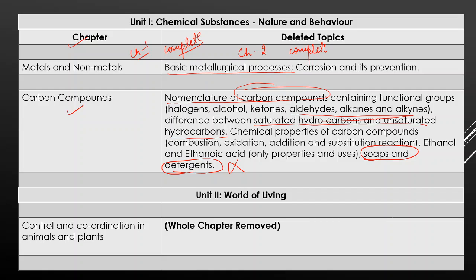We talk about second unit, World of Living, means Biology. Biology, you see what is deleted. We have six chapters in Biology. Life Processes, nothing deleted from this, this will come completely. After this our seventh chapter is Control and Coordination in Animals and Plants. Whole chapter removed, complete chapter removed.